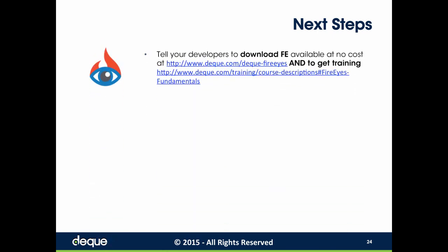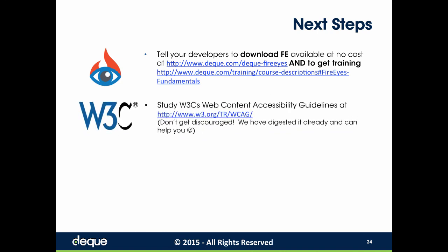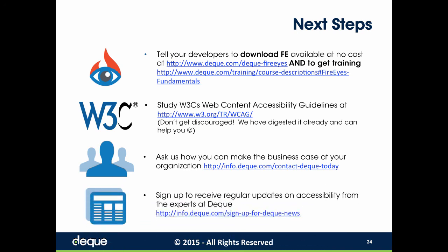Here are a few next steps you can take after today's webinar: Tell your developers to download FireEyes from DQ, available at no cost — two links are provided for how to download and get training. Review and study WCAG 2.0, but please don't be overwhelmed by its length or get discouraged — those of us at DQ have already digested it and can help you understand it. Contact your DQ office directly or a DQ sales development representative. Stay ahead of the ever-changing landscape with new stories, highlights, and happenings in the world of web accessibility by signing up for regular updates from DQ.